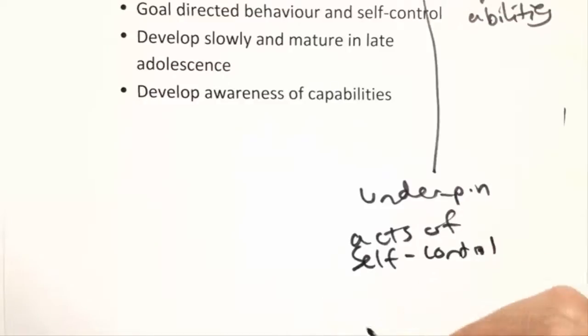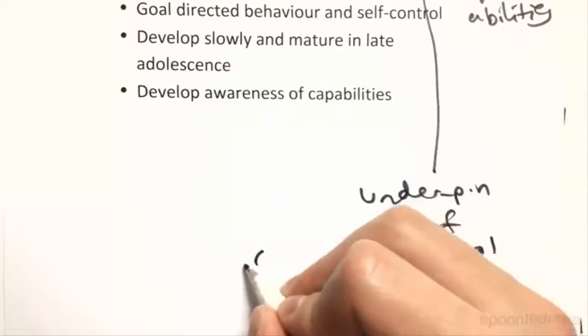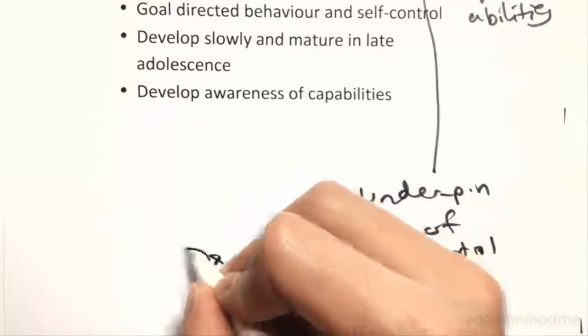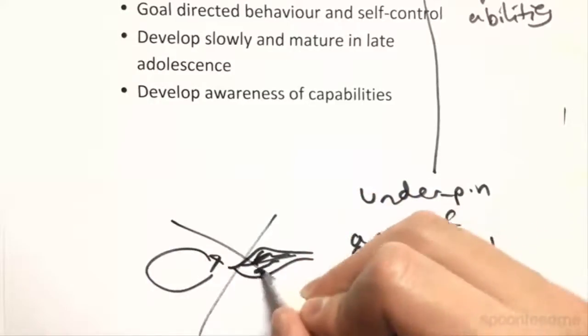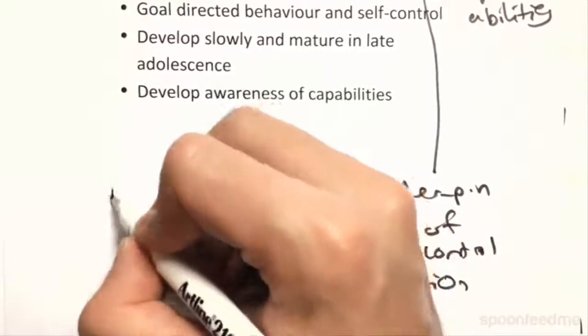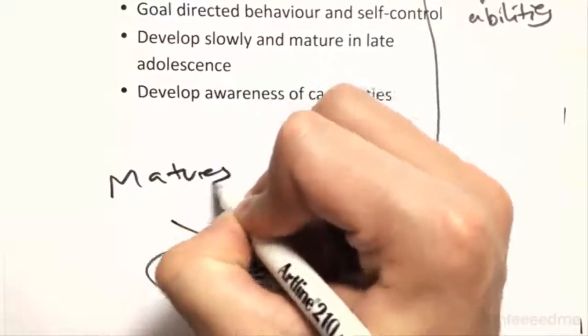So behavior initiating, modulation, attention, response inhibition. So like stopping ourselves before we're going to do something. I'm going to say something. No, I'm not going to say it anymore. This is very slow and only matures in late adolescence.